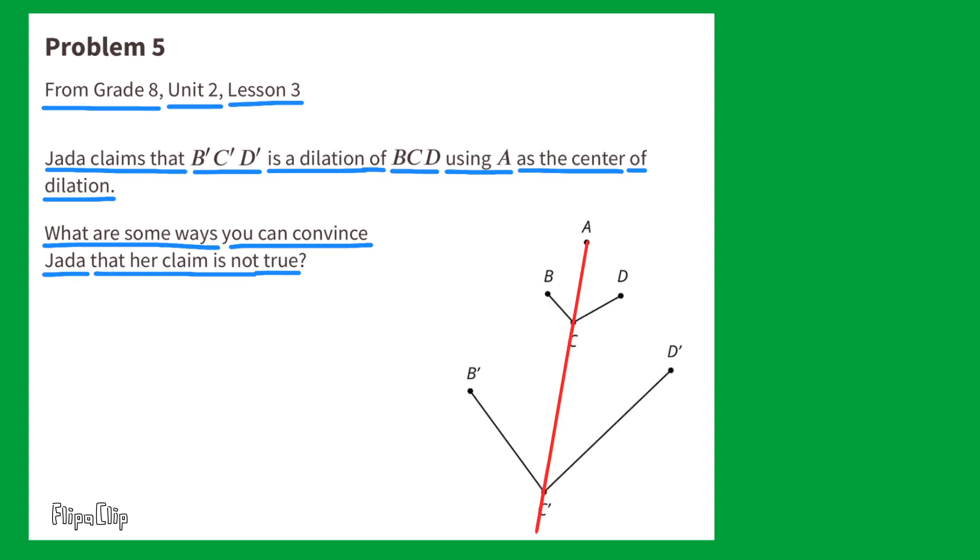First, I'll check to see if A, C, and C prime are collinear, and that they are. And I'll check to see if A, B, and B prime are collinear, and they are, and A, D, and D prime are also collinear. So, so far, so good for Jada. I'll have to do a little bit more digging to convince her that her claim is not true.